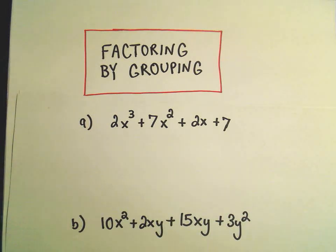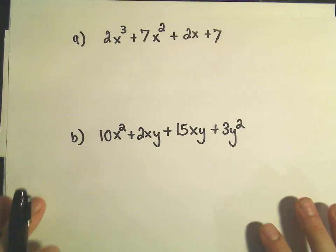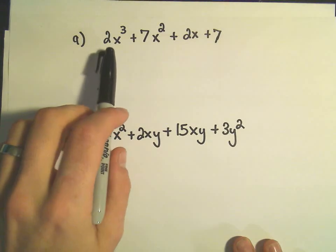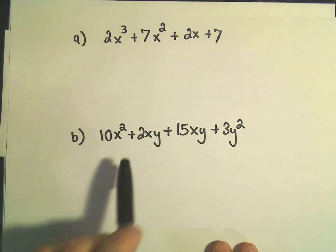In this video, I want to do two examples of what's called factoring by grouping. And typically, I start thinking about factoring by grouping when I see a polynomial that has four terms. So notice both of our examples, we have four terms in here.